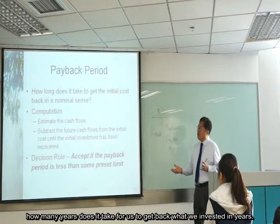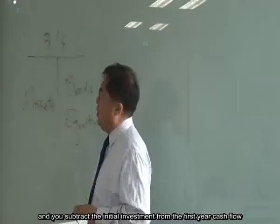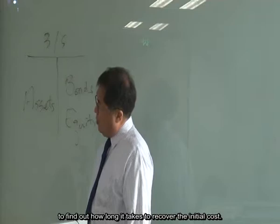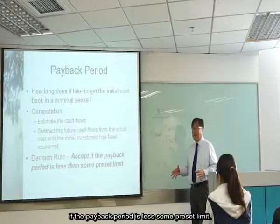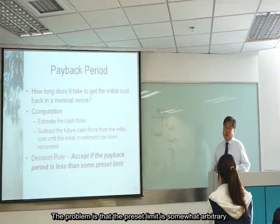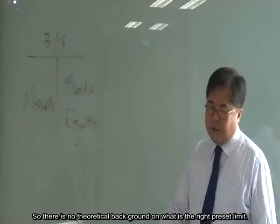For computation, estimate the cash flows, then subtract future cash flows from the initial cost until the investment is recovered. The decision rule is: accept the project if the payback period is less than some preset limit. The problem is that the preset limit is arbitrary — there's no theoretical background for choosing the right cutoff.